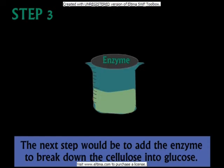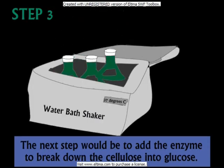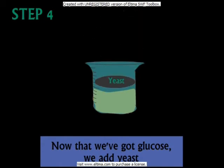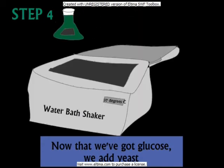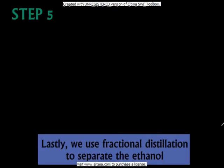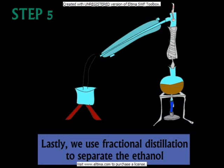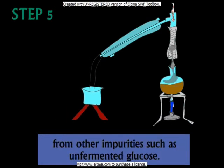The next step would be to add the enzyme to break down the cellulose into glucose. Now that we've got glucose, we add yeast to ferment the glucose into ethanol. Lastly, we use fractional distillation to separate the ethanol from other impurities such as unfermented glucose.